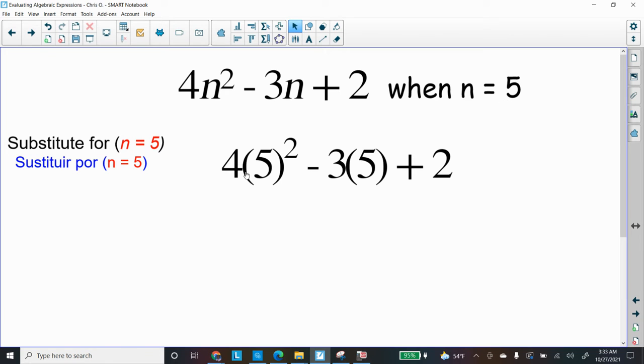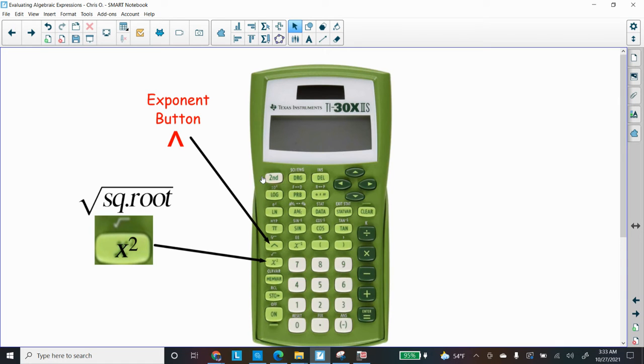Where did I get the 5 from? It says it right up here: n = 5. So I substitute it for n = 5. The first thing I remember: wherever I see the letter n, I have to substitute it for the number 5—the number that they gave us where n equals. In this case, it is 5.